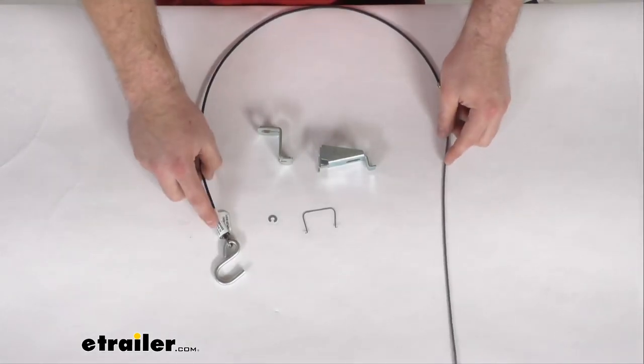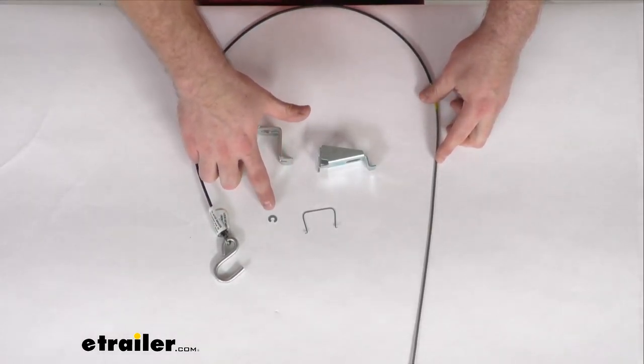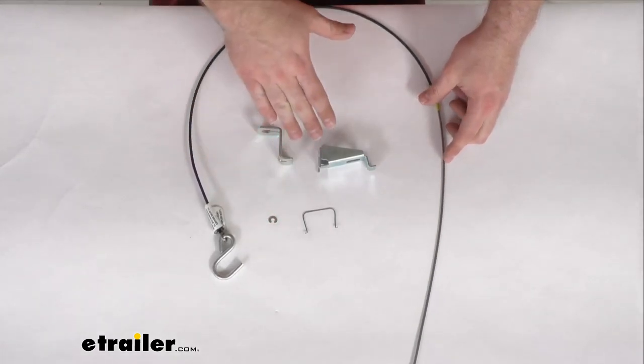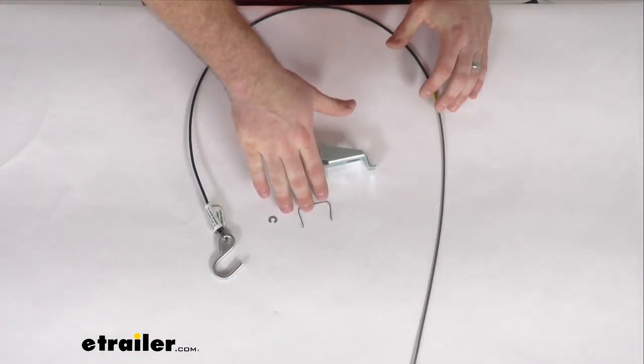So this kit will include the breakaway cable, the cable attachment plate, the breakaway cable clip, as well as the push rod release bracket and the push rod release bracket spring.